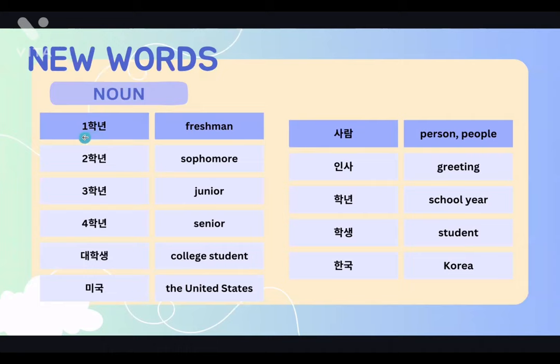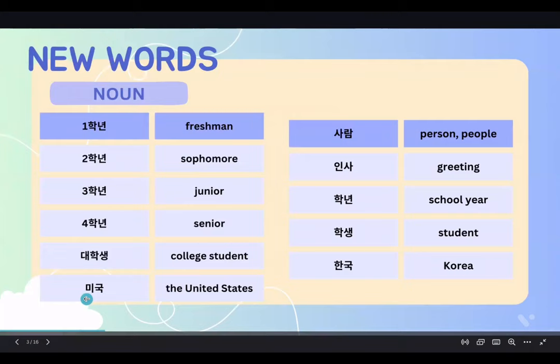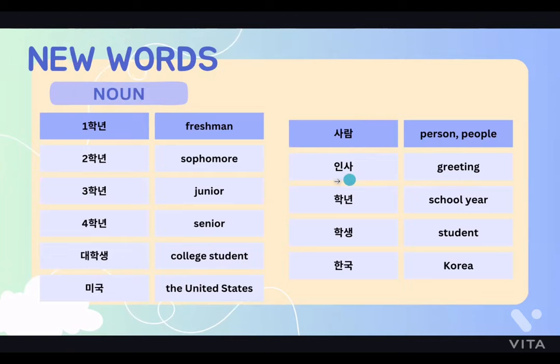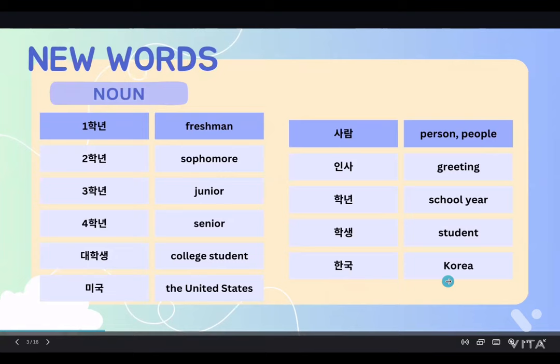1학년 — Freshman. 2학년 — Sophomore. 3학년 — Junior. 4학년 — Senior. 대학생 — College student. 미국 — The United States. 사람 — Person, for people. 인사 — Greeting. 학년 — School year. 학생 — Student. 한국 — Korea.